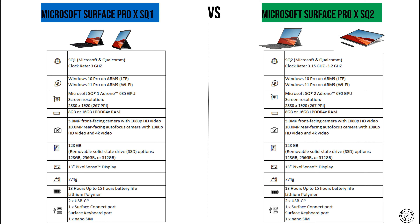The display screens are the same — it's the PixelSense display technology at 13 inches, and the weight is the same at 774 grams. The batteries have an autonomy of 13 up to 15 hours using lithium polymer technology, while the connections are pretty much the same.